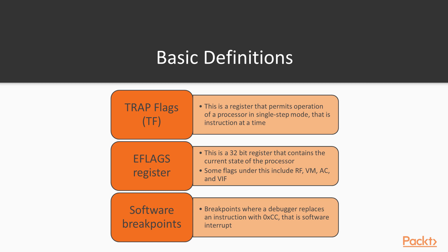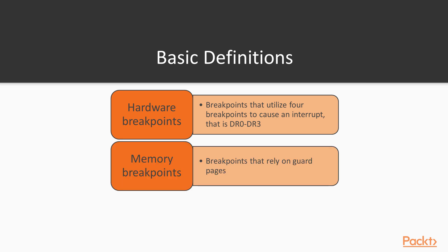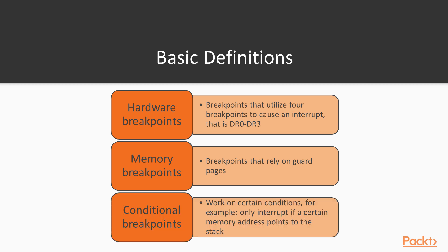The important thing we discussed is breakpoints. Breakpoints may come in a few formats. We may have software breakpoints, which push a certain instruction in memory — the 0xCC, or software interrupt — which stops execution. Hardware breakpoints help us perform interrupts at a hardware level, usually referenced between DR0 to DR3 in memory. We also have memory breakpoints that rely on guard pages, though these are not very commonly used for malware detection. Lastly, we have conditional breakpoints, where you only interrupt if a certain memory address points to the stack.